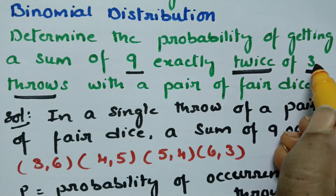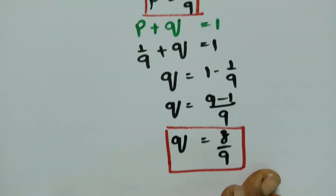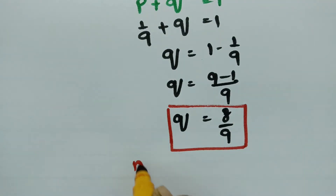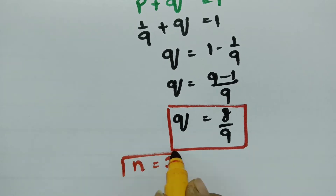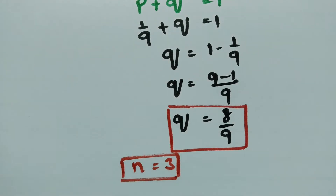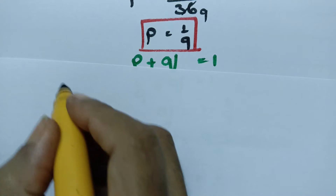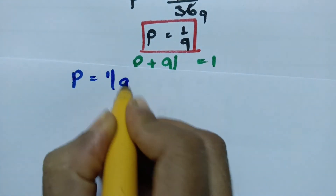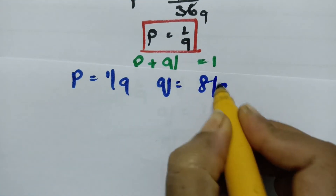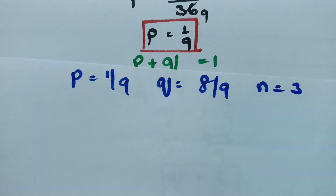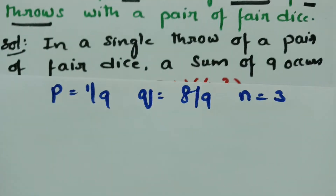So how many throws? 3 throws, so n is equal to 3. The n value is clearly equal to 3. There are 3 throws, and now we have to find out the probability. P value is equal to 1/9, Q is equal to 8/9, and n is equal to 3. With the help of these values, we determine the probability.